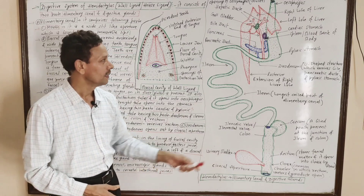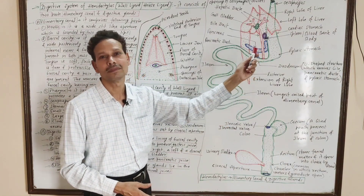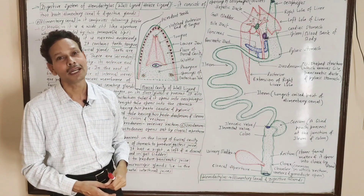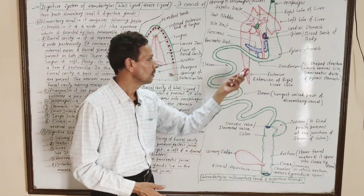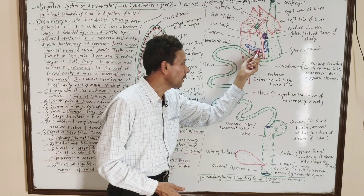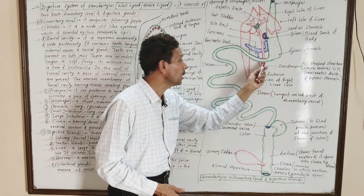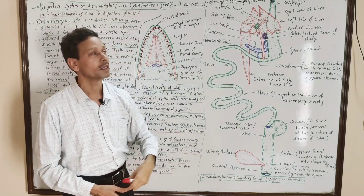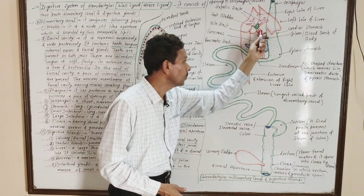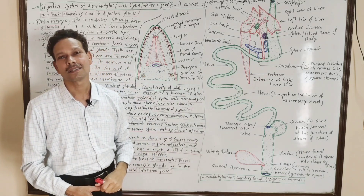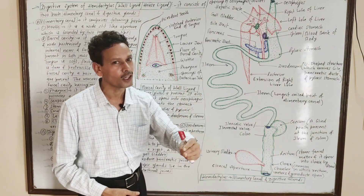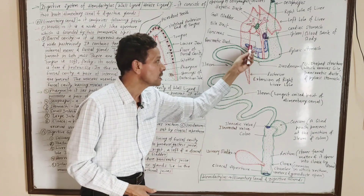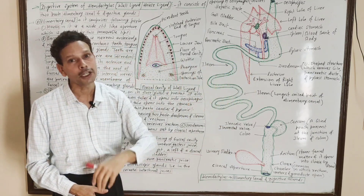The duodenum, this U-shaped structure of the small intestine, receives the secretion of the pancreas through the pancreatic duct, and the secretions of the liver lobes through the bile ducts. In the duodenum, both the bile juice from the liver and the pancreatic juice from the pancreas are received.